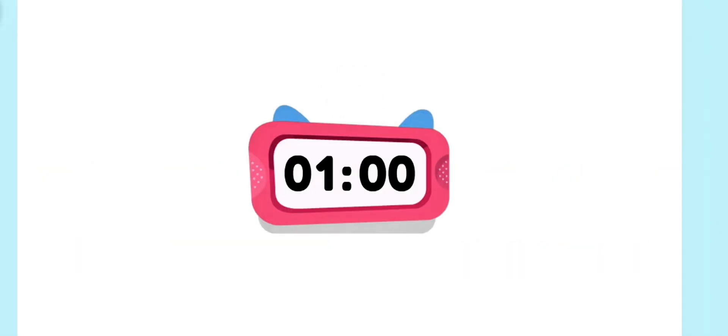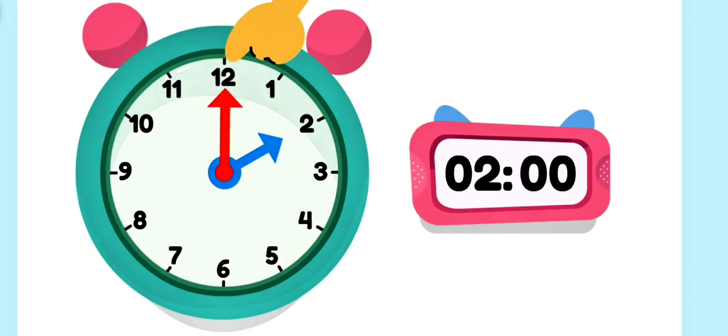Look at this clock! The first number tells us the hour. And the second number tells us the minutes. It is one o'clock! Now it's two o'clock! Here's another type of clock. There are twelve numbers. On this clock, the small hand points to the hour. And the big hand points to the minute. Now it's three o'clock!